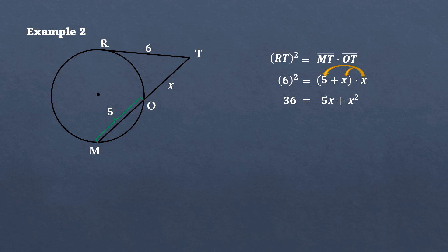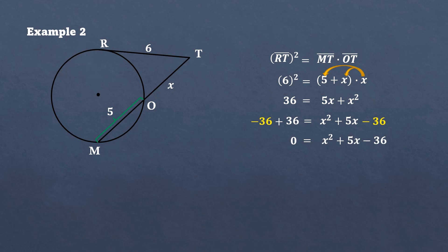We have 36 equals X squared plus 5X, arranging the terms in descending exponent order. Transposing 36 to the other side by adding its inverse, negative 36, to both sides: 36 minus 36 equals 0, giving us X squared plus 5X minus 36 equals 0. This is a quadratic equation, and we can use any method to solve it. Using the factoring method, the factors of X squared plus 5X minus 36 are (X plus 9) multiplied by (X minus 4).